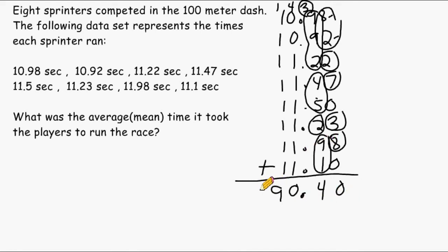So what we're going to do now is we're going to take this total and divide it by 8. And the reason we divide it by 8 is because you always divide by the total amount of numbers that you added together to get that total.